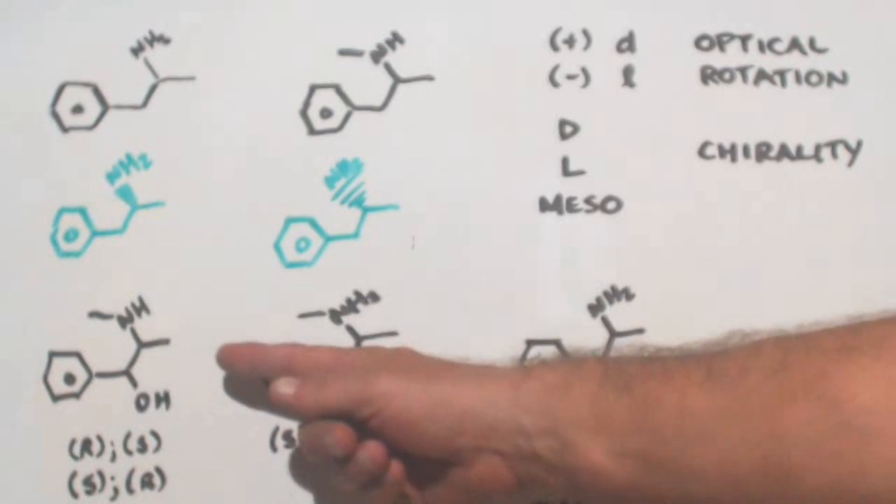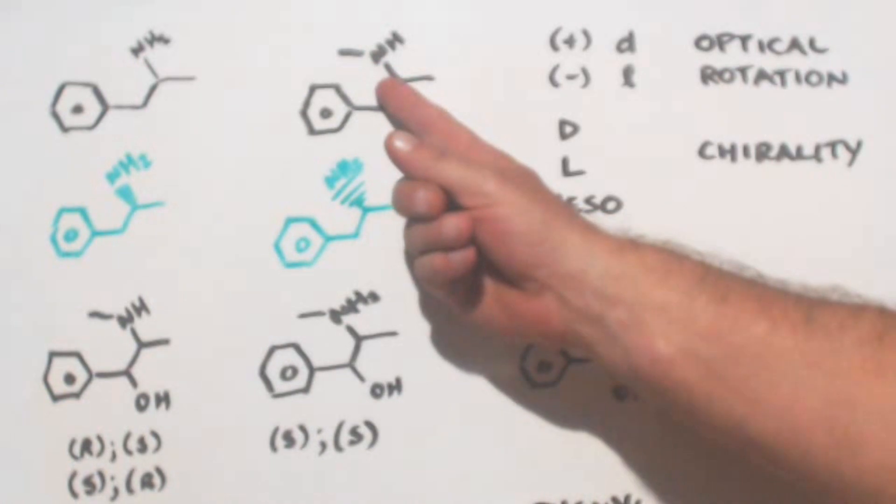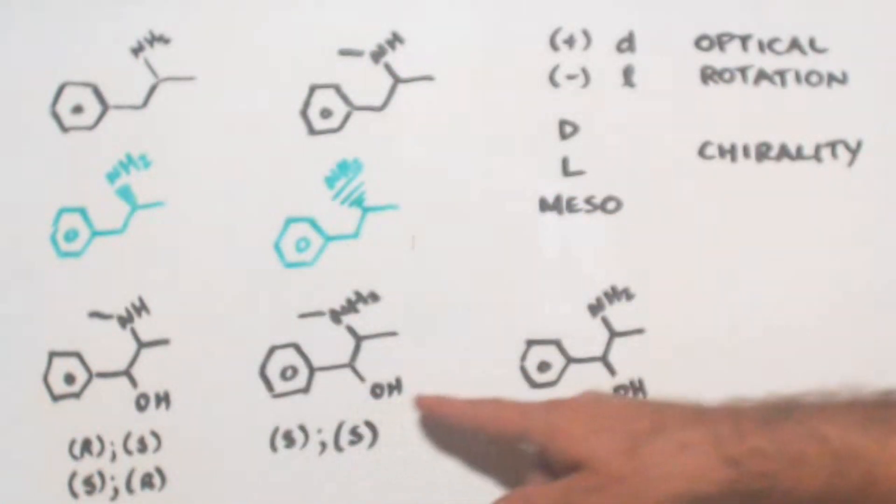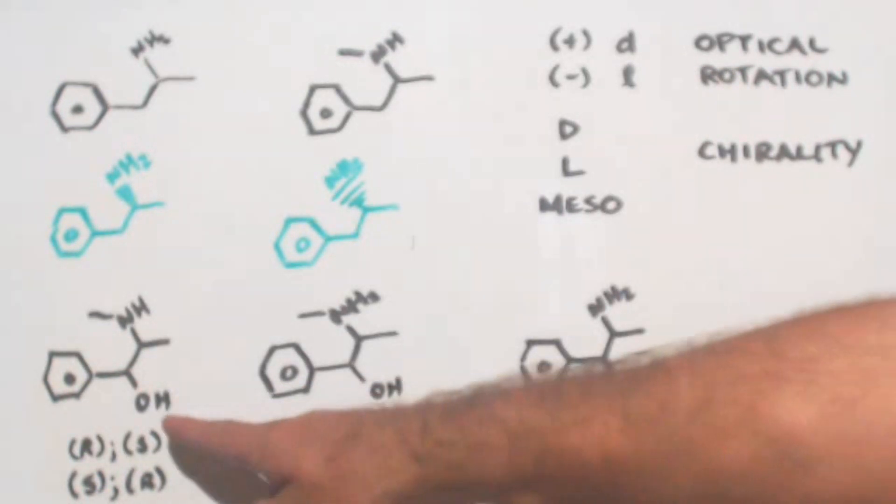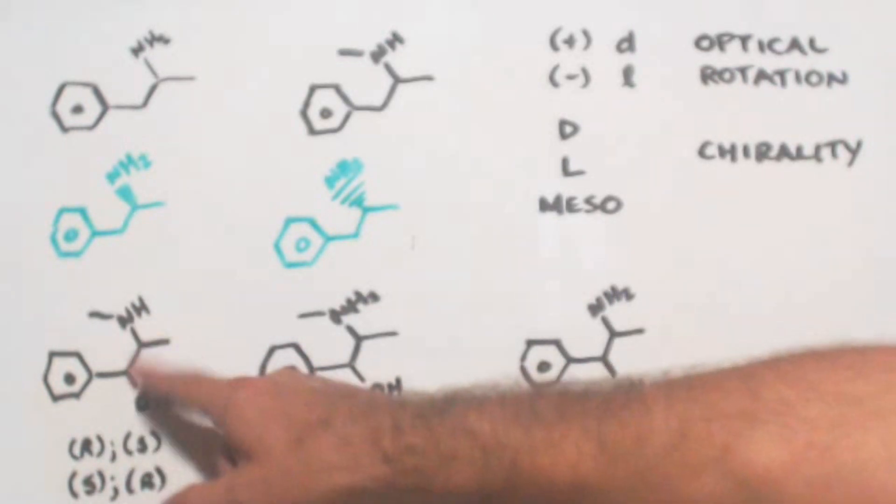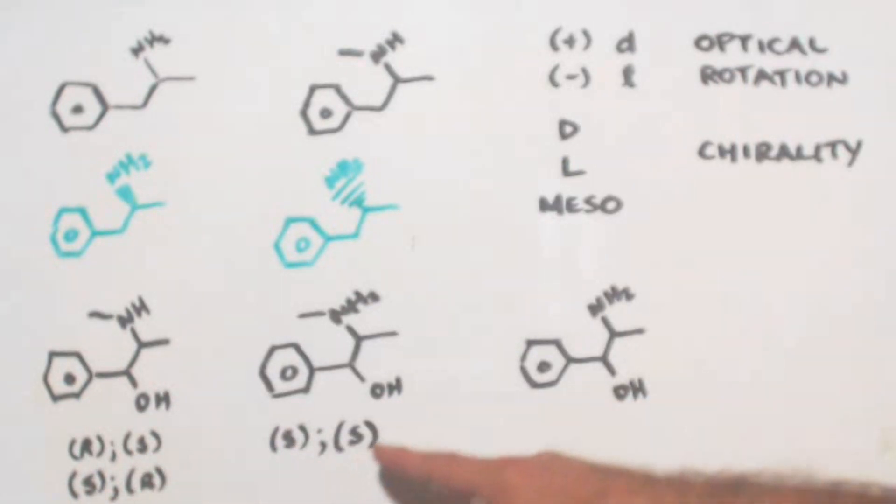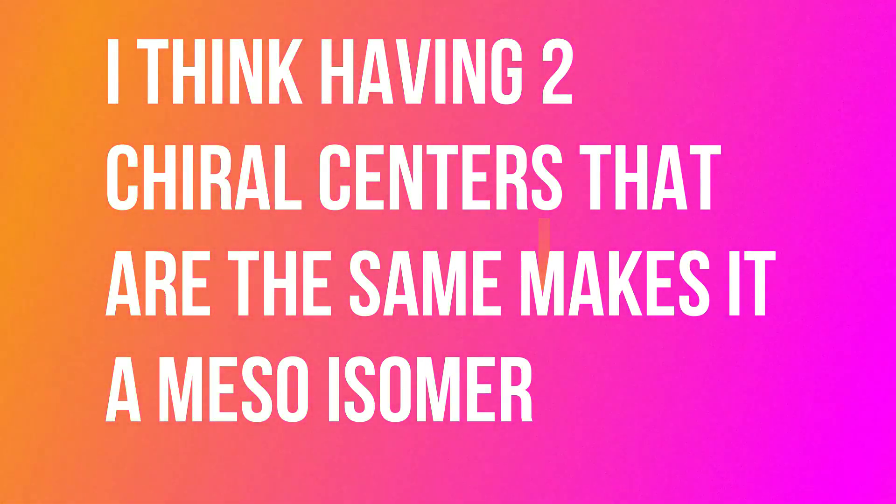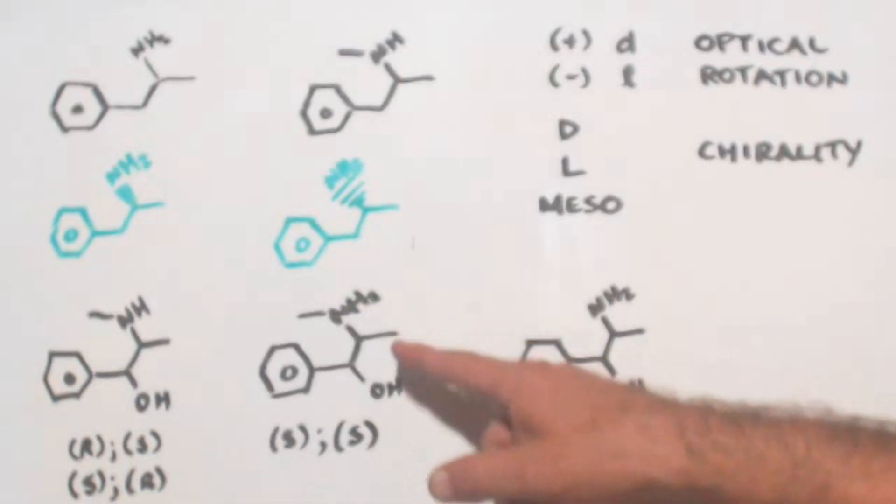This is ephedrine. You can see the only difference between it and methamphetamine is there's a hydroxy group right here. Now this is pseudoephedrine. It's the same exact thing as this. The only difference is the chiral centers. There's two chiral centers now because you've got the OH. These are opposites. See RS, SR, whereas these are the same to get the pseudo. You've got an S and an S.